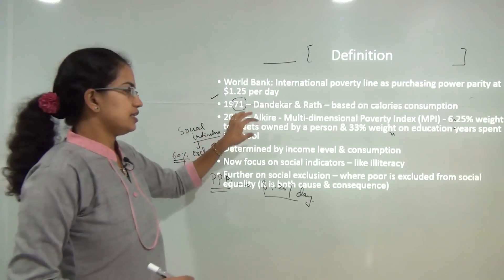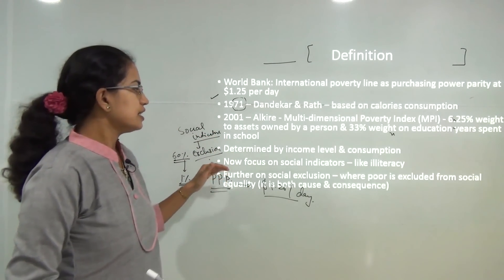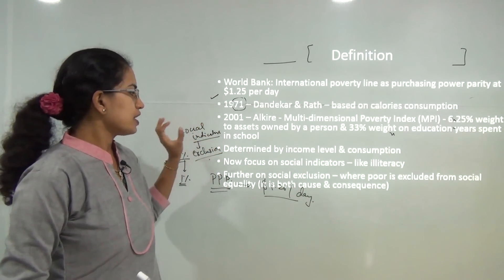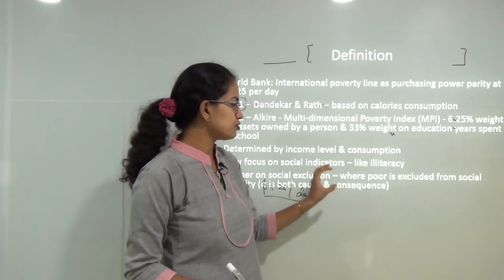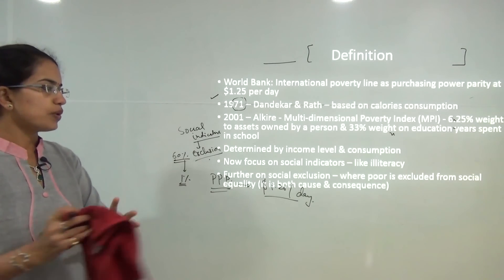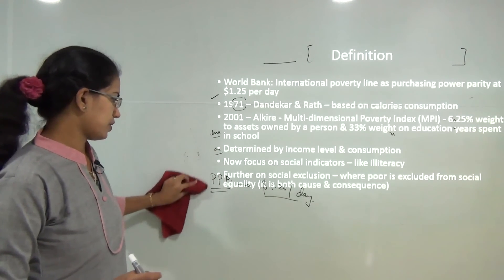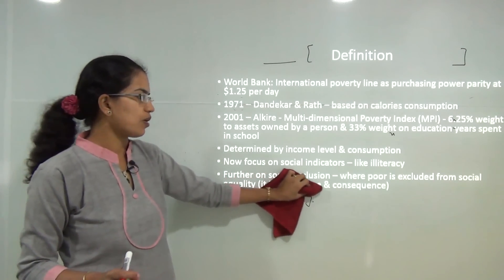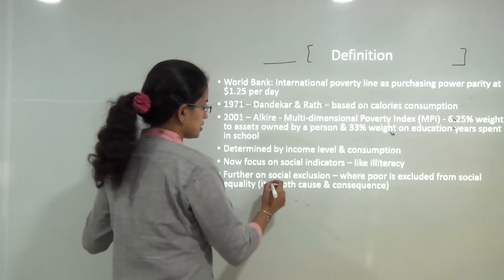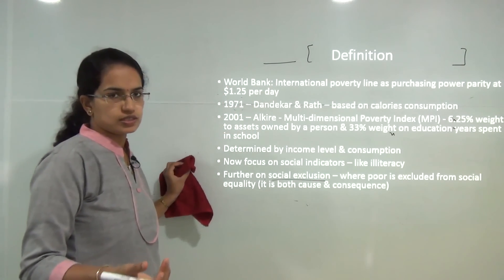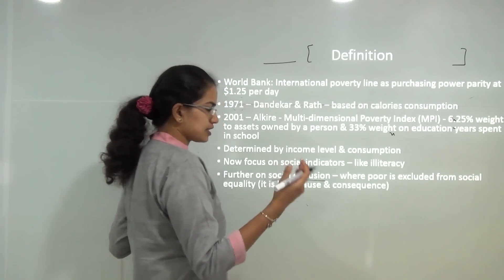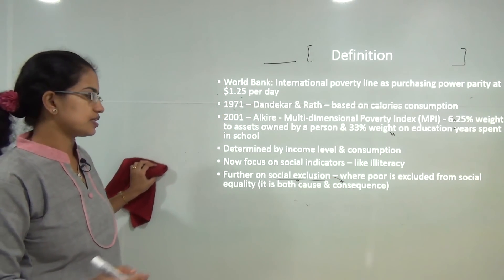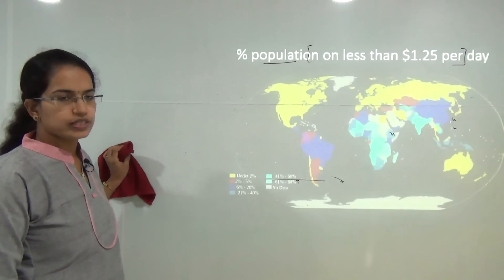Poverty measurement shifted from income and consumption levels to social indicators, and finally the idea of social inclusion — identifying areas where the poor are excluded from social equality. Social exclusion is considered both a cause and a consequence: because of social exclusion there is a rise in poverty, and since a person is poor, as a consequence they are socially excluded from society.